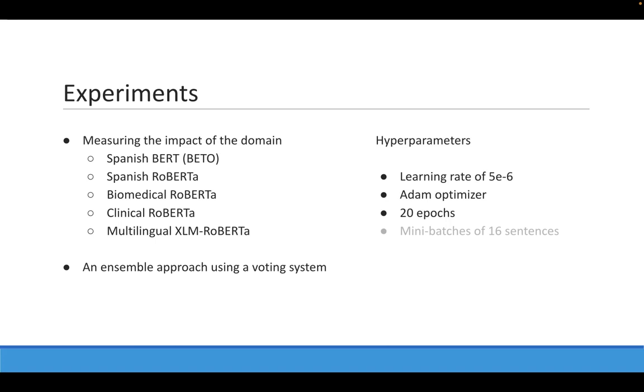These are the best values found to train our models. We used the Adam optimizer with linear decay and no warmup steps. We trained the models for 20 epochs using a batch size of 16 sentences and a maximum sentence length of 512 tokens.